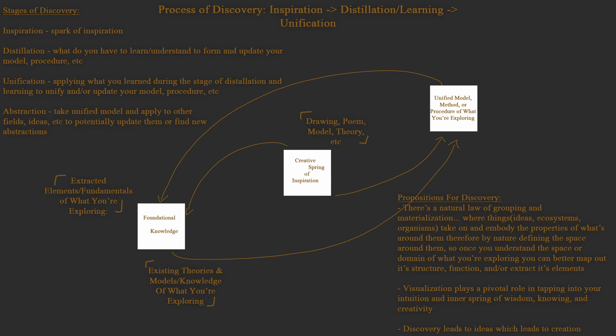Unification is taking what you learn from the process of distillation and unifying and applying that to your model, procedure, theory, etc. And then abstraction is taking that and applying it to other ideas and concepts, seeing if you can make further abstractions and pontificating on this model and the nature of things.